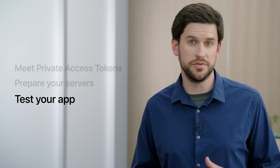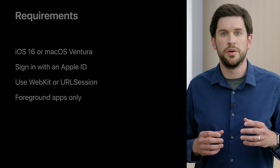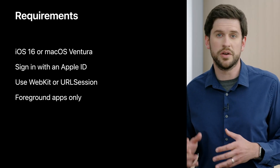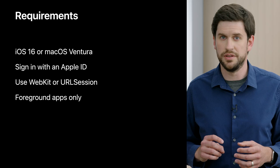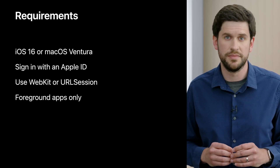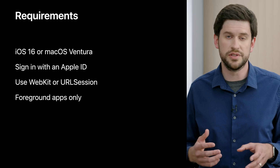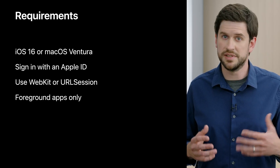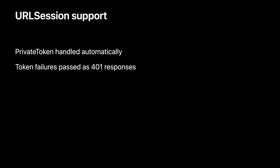Web servers that are accessed through Safari and WebKit will work automatically, but you can also use private access tokens within your app directly. Private access tokens require iOS 16 or macOS Ventura on a device that has an Apple ID signed in — this Apple ID is only used for attestation and is not shared with the servers that receive tokens. Within your app, tokens are available if you use WebKit or URL Session to contact your servers using HTTP. Then anytime your app receives a challenge while it's in the foreground, the system will automatically send a token as authentication. If you're using URL Session, you don't need to do anything explicitly to make private access tokens work — URL Session will automatically respond to challenges using the Private Token HTTP authentication scheme.